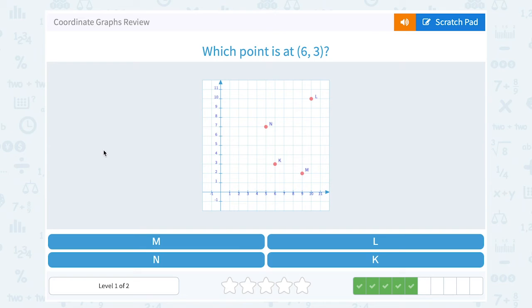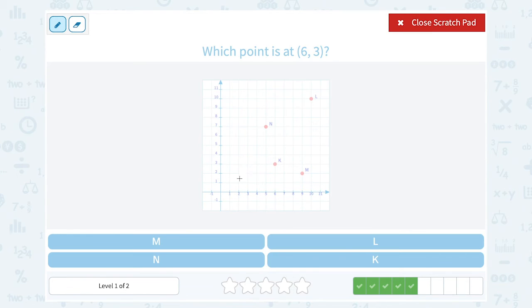Which point is at (6, 3)? Okay, well to plot (6, 3), I would have to go 6 to the right and up 3. So notice I'm in line with 6 on the x axis and 3 on the y. That is point K.